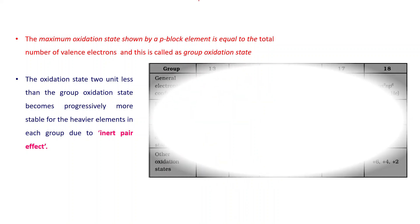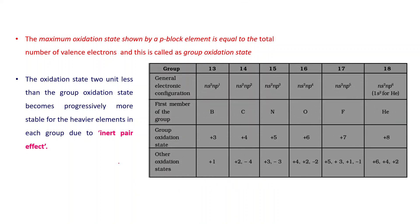The maximum oxidation state shown by any P-block element equals the total number of valence electrons, known as the group oxidation state. For group 13 with configuration ns² np¹, there are three valence electrons, so the group oxidation state is +3. Similarly, group 14 is +4, group 15 is +5, group 16 is +6, group 17 is +7, and group 18 is +8.